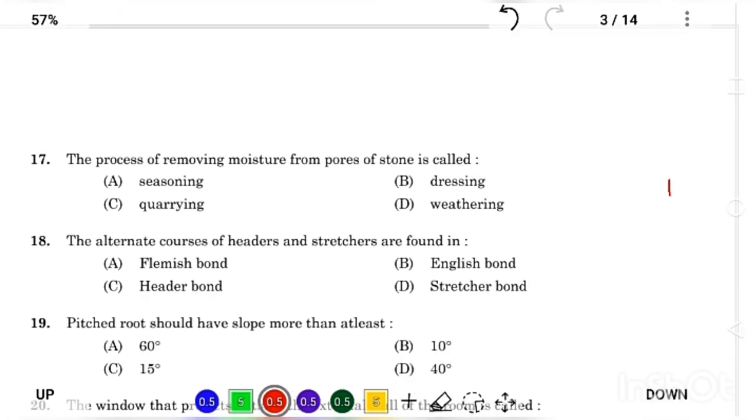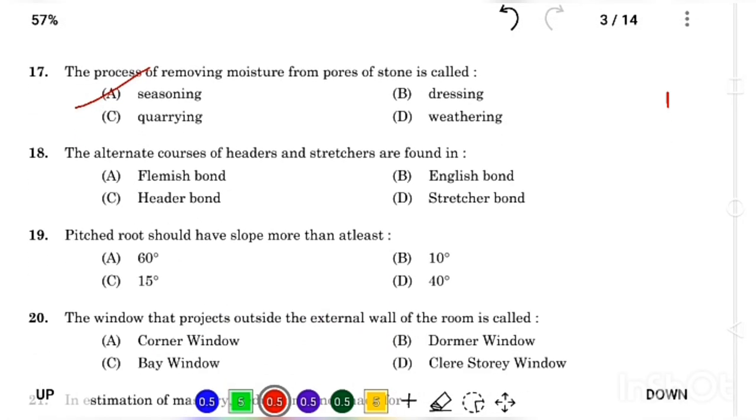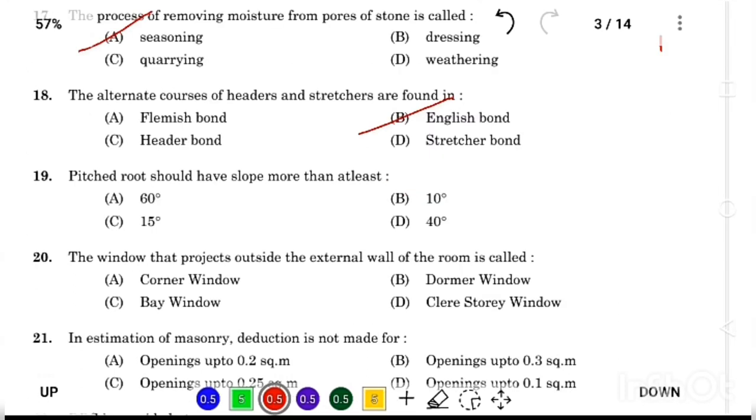The process of removing moisture from pores of stone is called Answer Option A, pre-seasoning. The alternate courses of headers and stretchers are found in Answer Option B, English bond. Pitched roof should have a slope more than at least Answer Option B, 10 degrees.